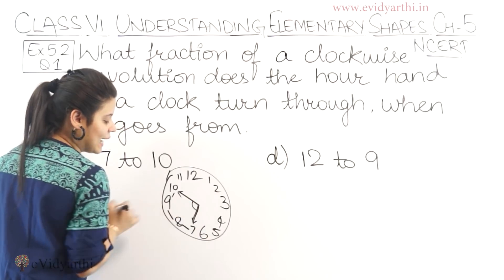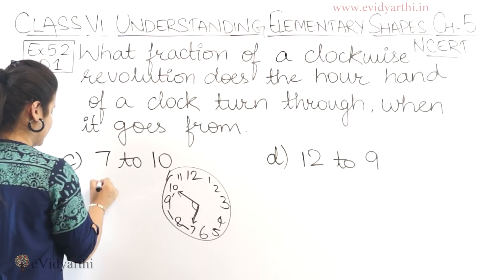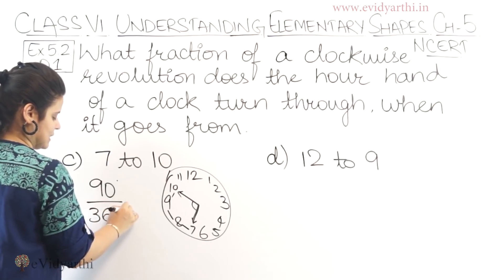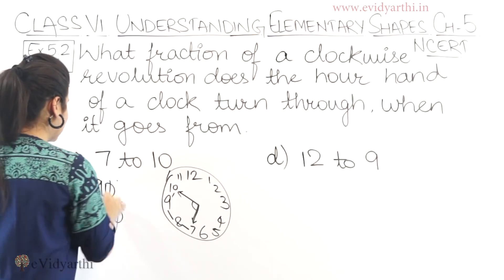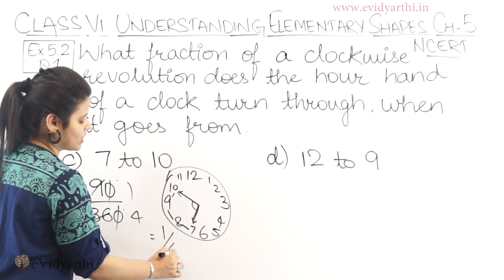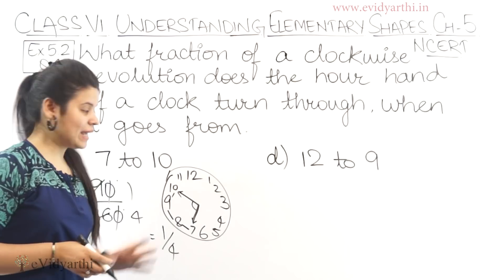Means, this is forming a 90 degree angle. So, 90 upon 360. Right? Zero se zero cancel. Nine to one, nine. Nine to four, thirty six. So, my answer is one upon four.